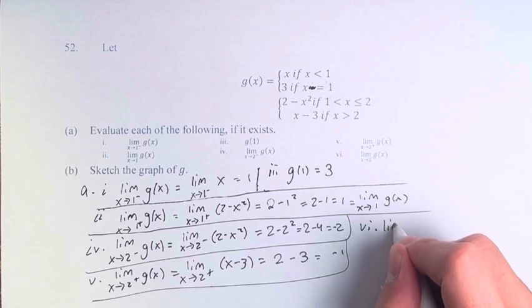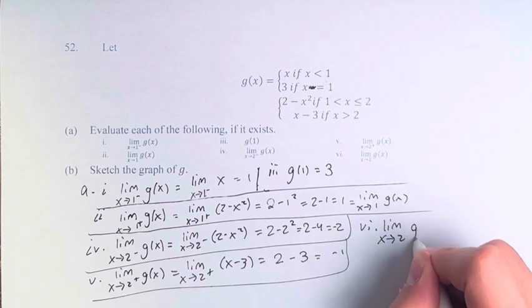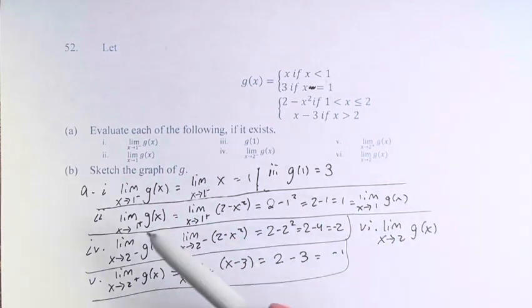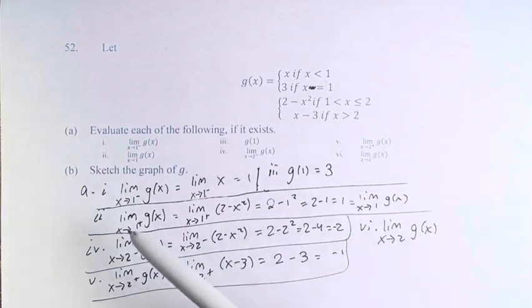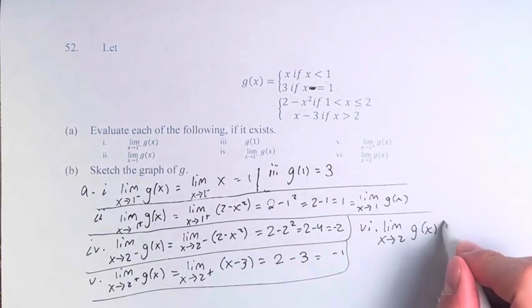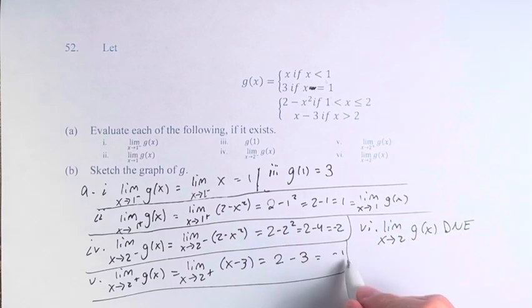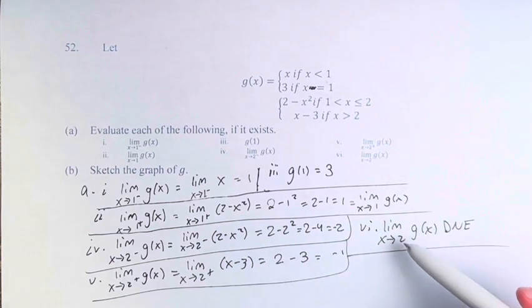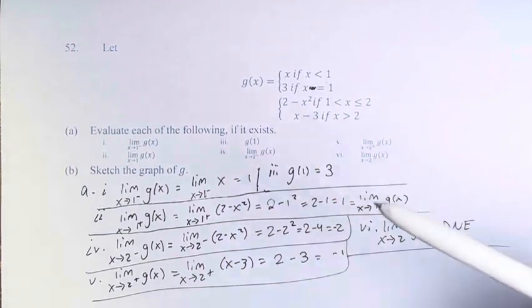And finally part 6, the limit as x approaches 2 of g(x). From the right it's negative 1. From the left it's negative 2. Therefore the limit itself does not exist. For the limit to exist, it has to approach the same value from the left and the right.